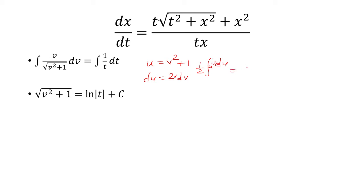So that's 1⁄2 times 2u to the 1⁄2. 2s are going to cancel. And then you're just going to be left with square root of u, which is just square root of v squared plus 1.